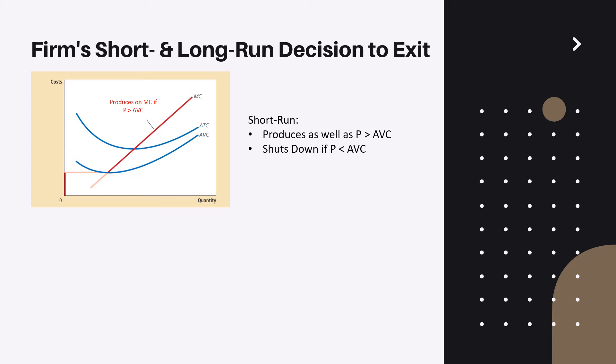We have seen many similar situations recently due to economic conditions that make a company temporarily shut down. The idea is: if the price of the product falls below the average variable cost (AVC), the company will be incentivized to shut down. We use the AVC curve because in the short run, fixed costs are considered sunk costs — they cannot be affected and business decisions are not based on them.